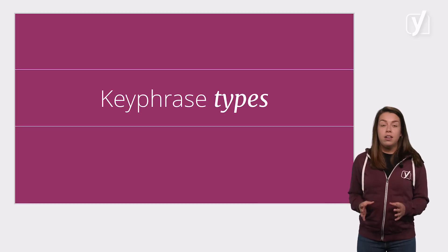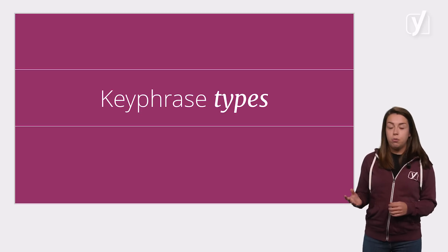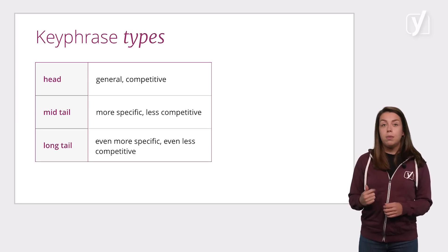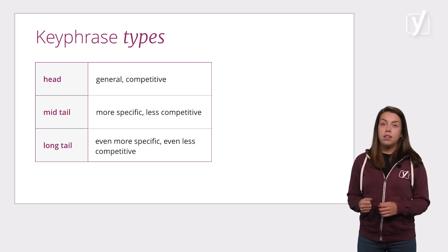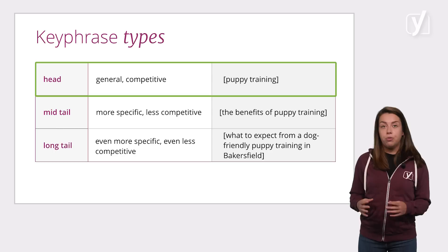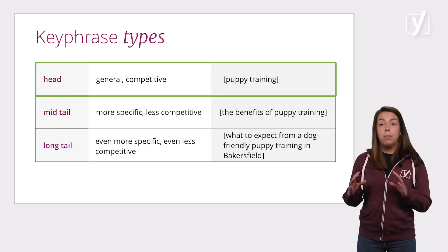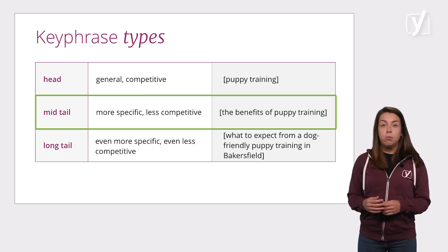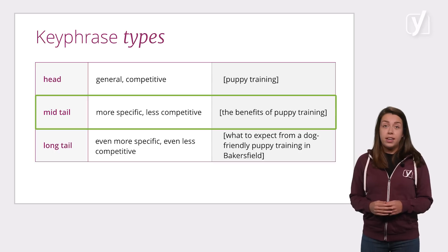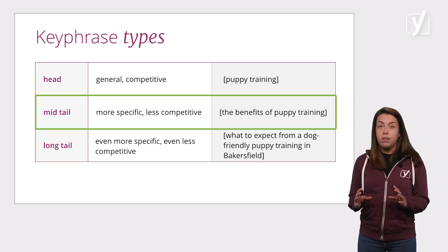Now let's go into the different kinds of keyphrases. Some keyphrases are rather generic, others are more specific. We distinguish three kinds: head keyphrases, mid-tail keyphrases, and long-tail keyphrases. Head keyphrases are the most competitive — very generic, a lot of people search for them, and they're the hardest to rank for. A head keyphrase could be 'puppy training'. Mid-tail keyphrases are more specific, derived from the head keyphrase they tie into. For this particular head keyphrase, mid-tail keyphrases could be something like 'dog-friendly puppy training' or 'the benefits of puppy training'.